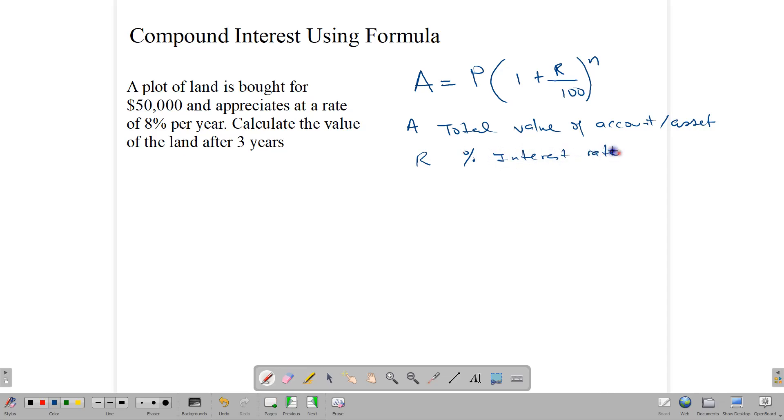And, of course, the n. The n is the number of years. And in banking terms, they call it the number of compounding periods. Compounding periods. And, of course, P is the principal or P is the original value. All right.